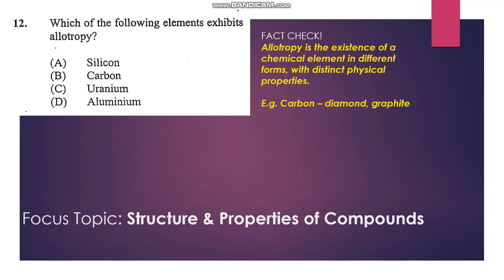Number 12: which of the following elements exhibits allotropy? Allotropy is the existence of a chemical element in different forms with distinct physical properties. We know the best example of allotropy is carbon, which shows two forms: diamond and graphite. So carbon is our answer.